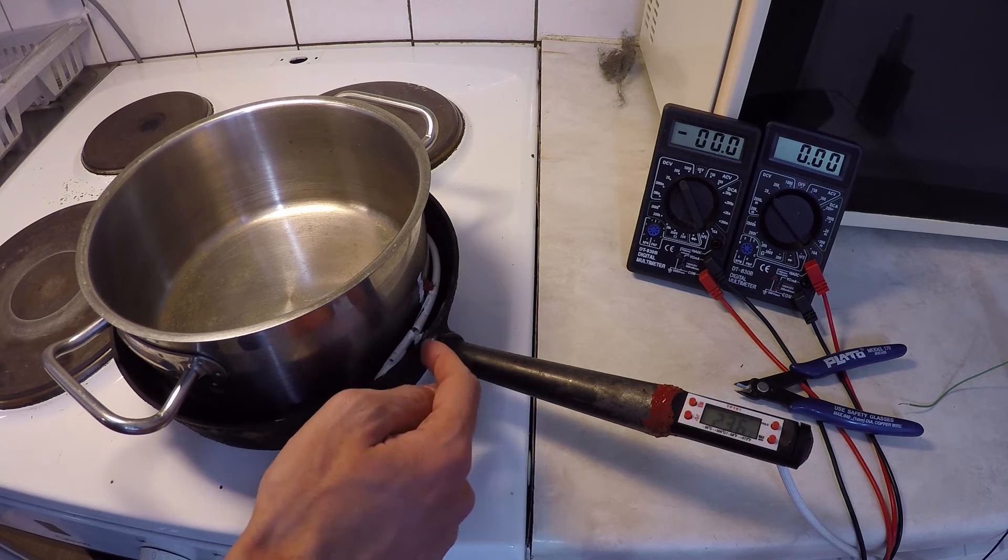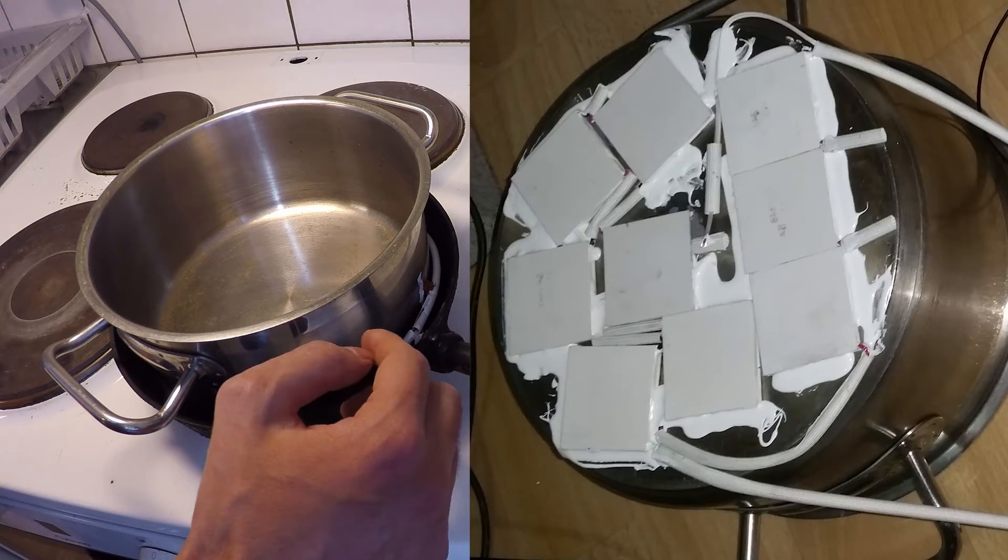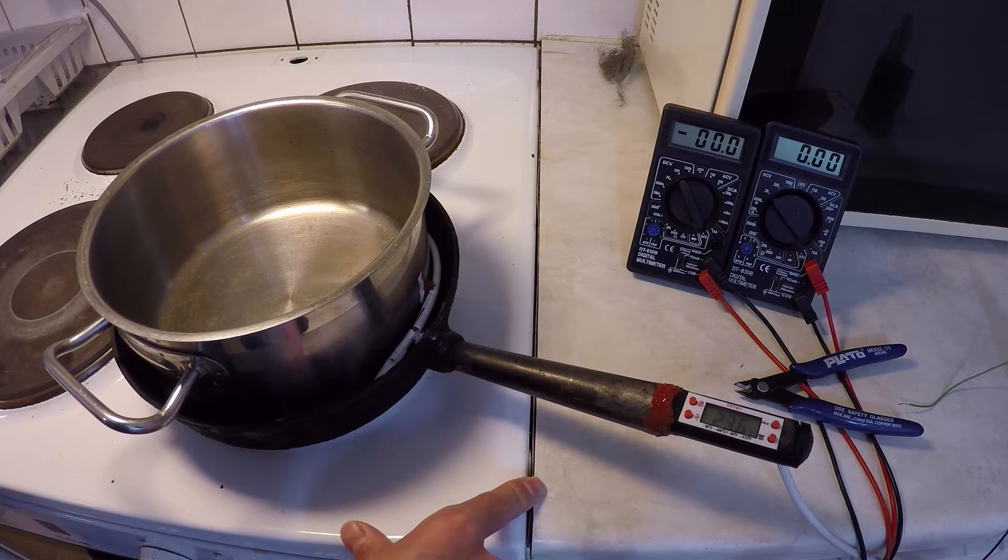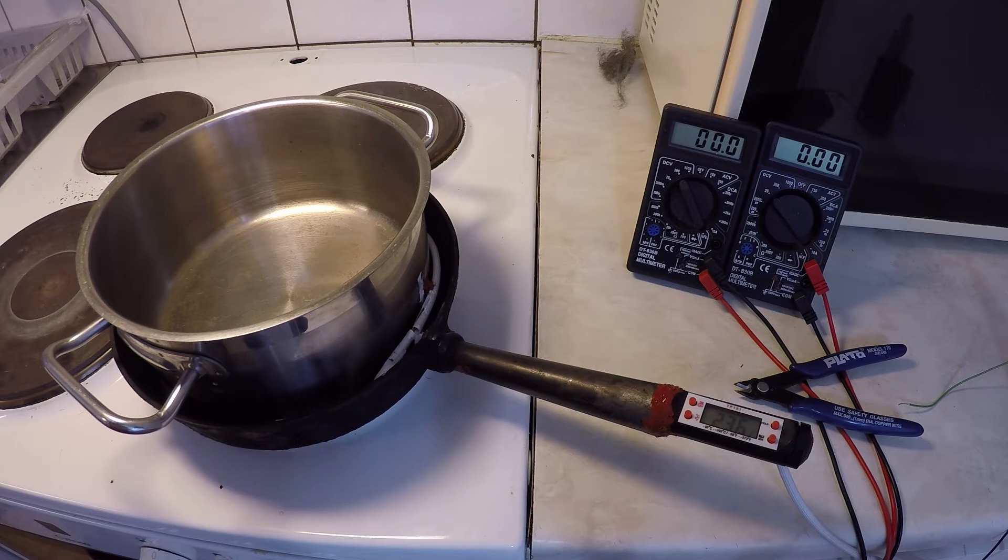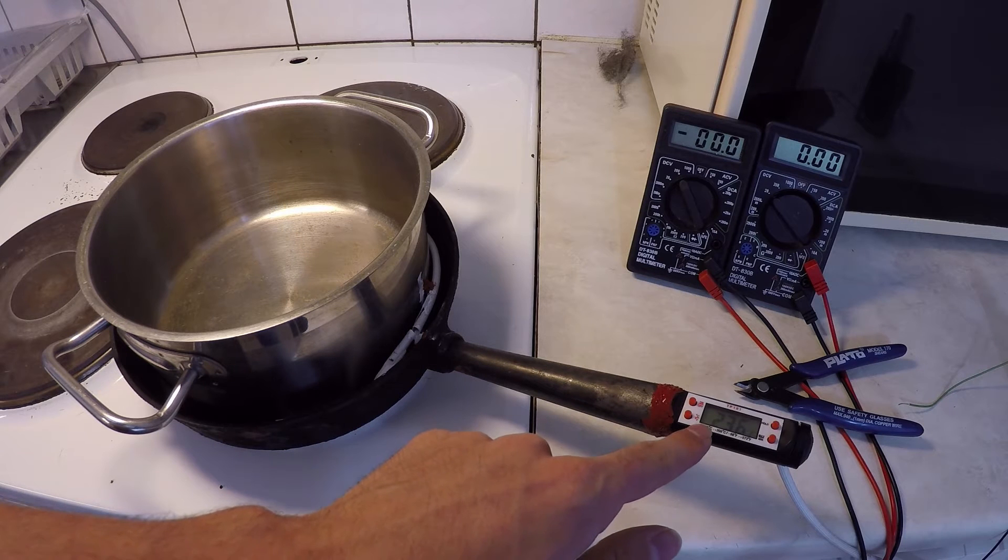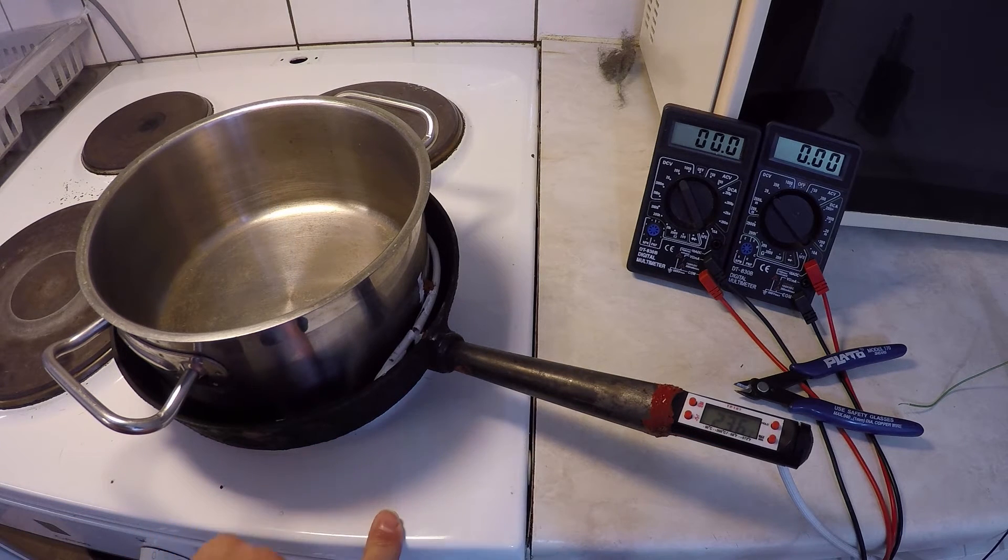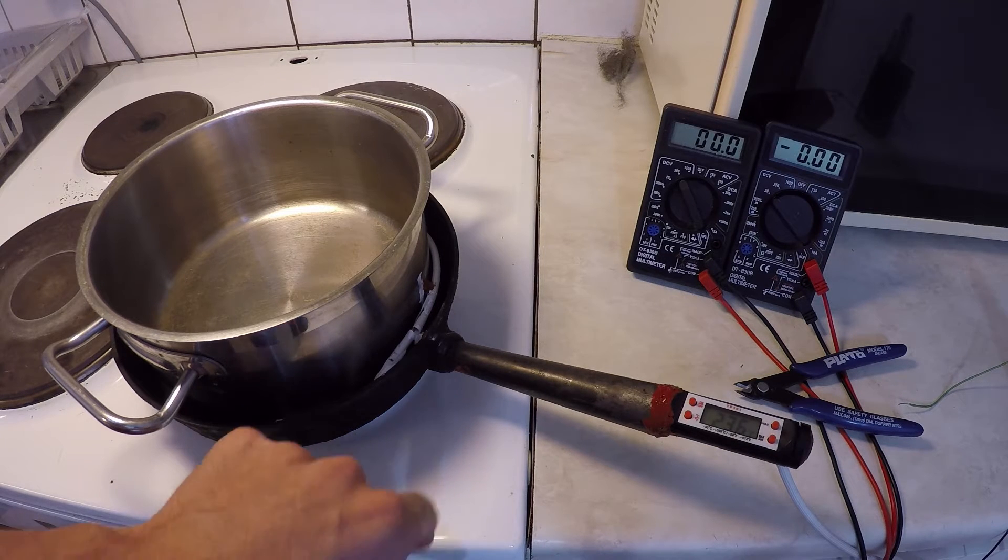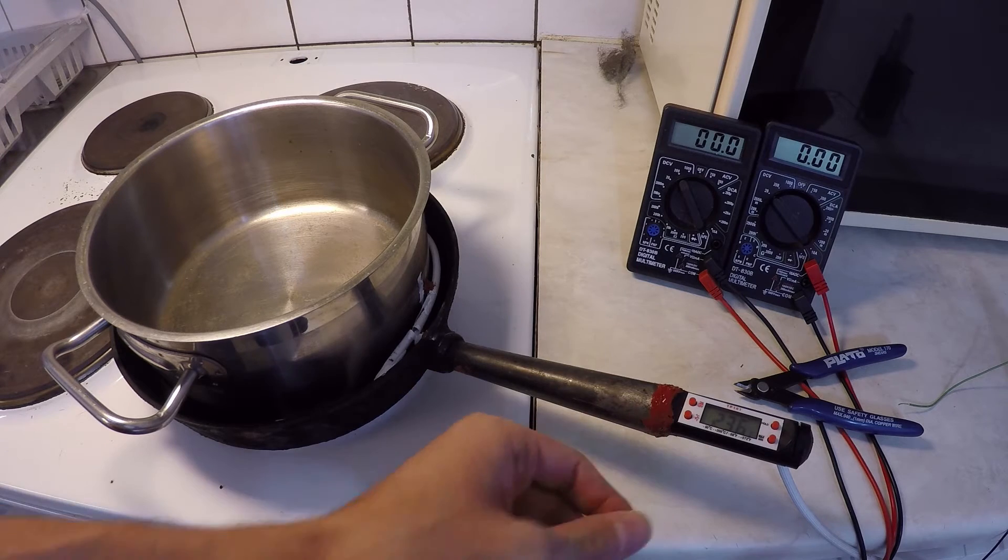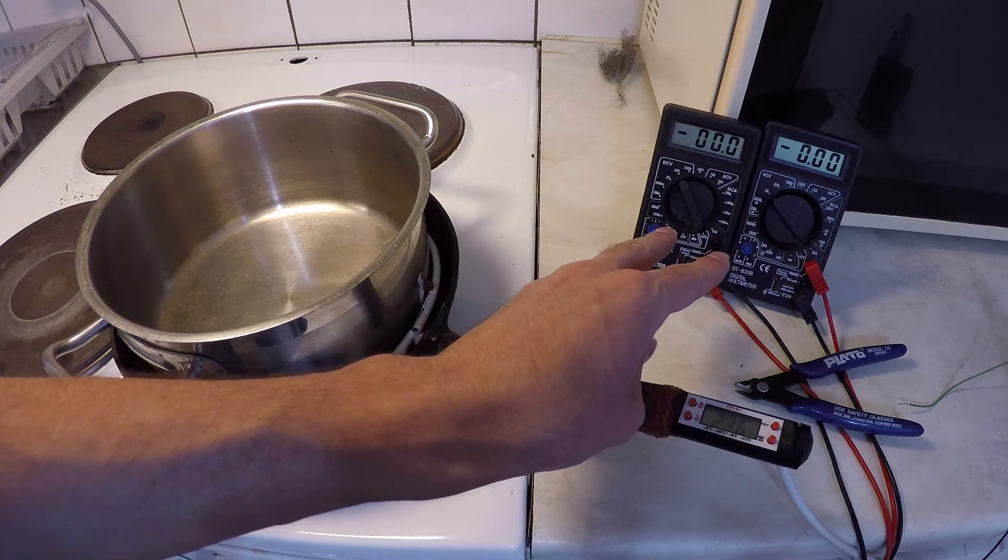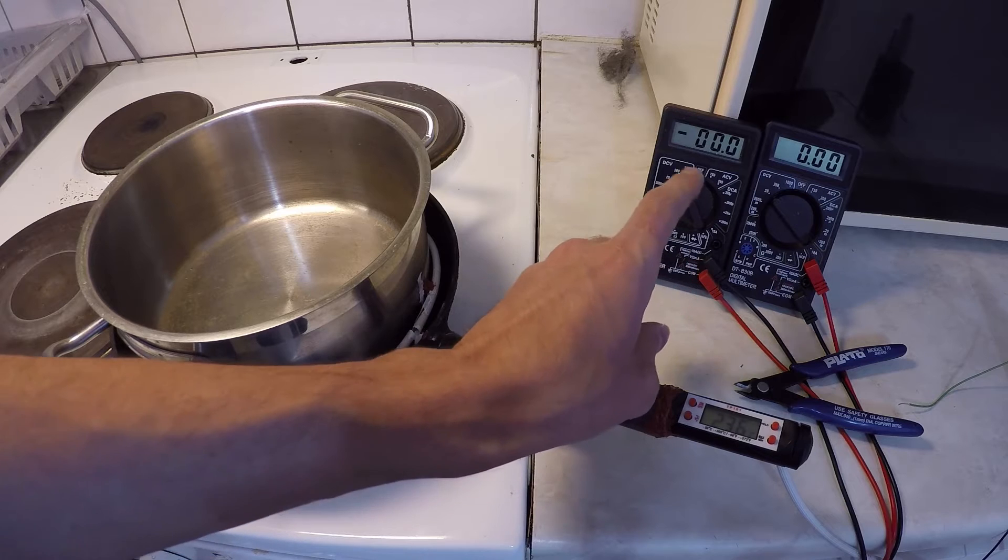I drilled a hole here to put a sensor for the temperature, so I use this one for temperature reading. It was for cooking so it can read up to 350 Celsius degrees. And I attached here two voltmeters, one for the voltage and the other on the right for the amps.